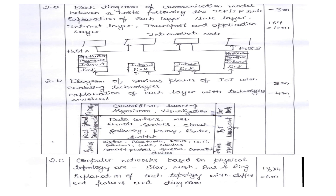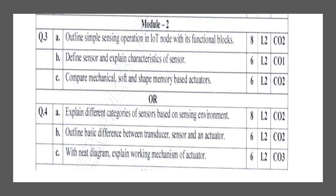For the IoT planes question, draw the diagram showing various planes of IoT — the diagram carries three marks and explanation of all parts carries four marks, totalling seven marks. For the physical topologies question, list the topologies — star, mesh, bus, and ring — draw their network diagrams, and explain each with examples. This carries six marks total.